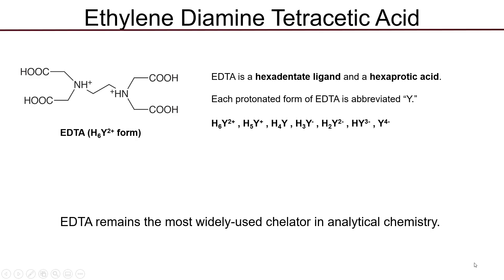In order to understand the chemistry of EDTA, we first have to look at the structure of our chelating agents. EDTA is a long organic molecule that consists of two types of organic functional groups: carboxylic acids — four carboxylic acid groups — and two amine groups. So in general, we have four acidic organic functional groups and two basic organic functional groups.